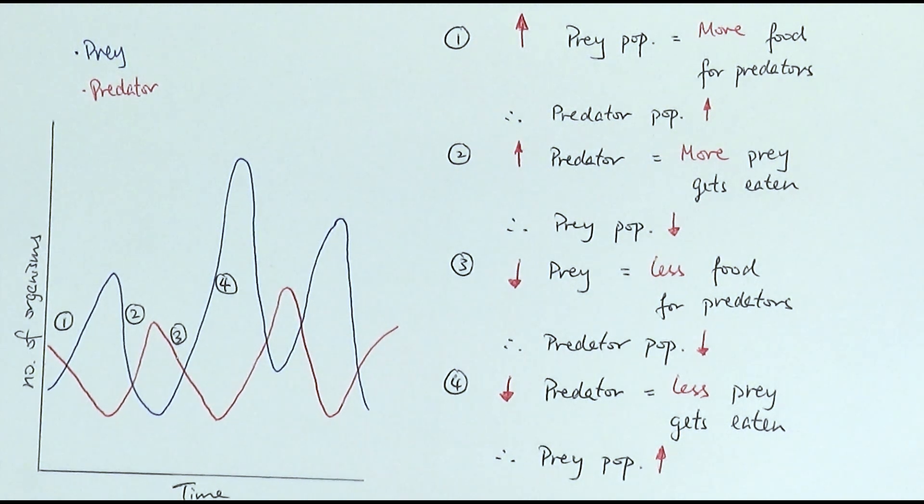So as you can see, the population sizes of the prey and the predator follow each other. They show the same trend and the same pattern.